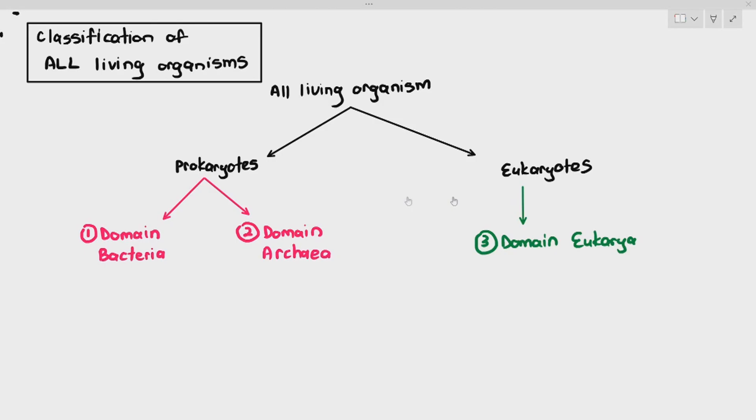But when they identified archaea, they realized that archaea, they kind of look like bacteria, but they also have distinct features as well. That's why the prokaryote group is split into two domains. Domain is just a large group. And within eukaryotes, we classify any organisms with a nucleus into an extremely large group known as domain eukarya.